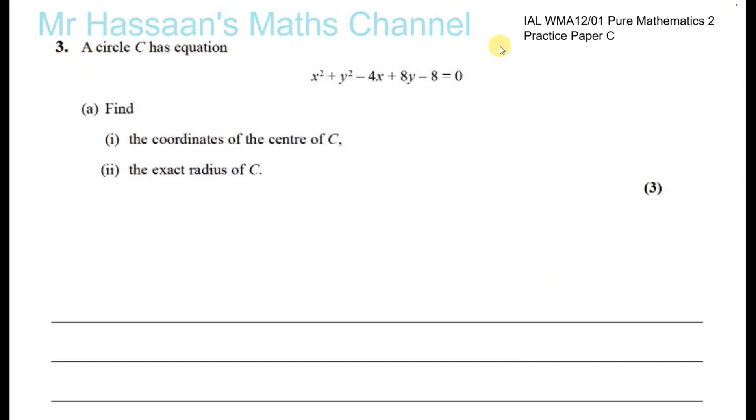Question number three, practice paper C, IAL P2 Pure Maths 2, question about circles. Here we are given an equation of a circle in this form: x squared plus y squared minus 4x plus 8y minus 8 equals 0. We have to find the coordinates of the center of the circle and the exact radius of C.